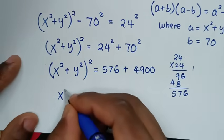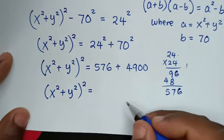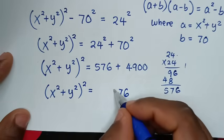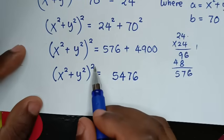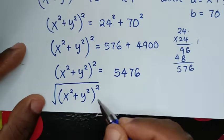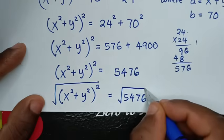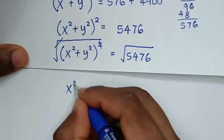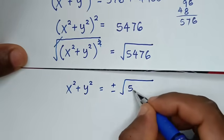Adding: 576 + 4900 = 5476. We have (x² + y²)² = 5476. Applying square root on both sides, x² + y² = ±√5476. Finding the square root of 5476: it is 74. So x² + y² = ±74.